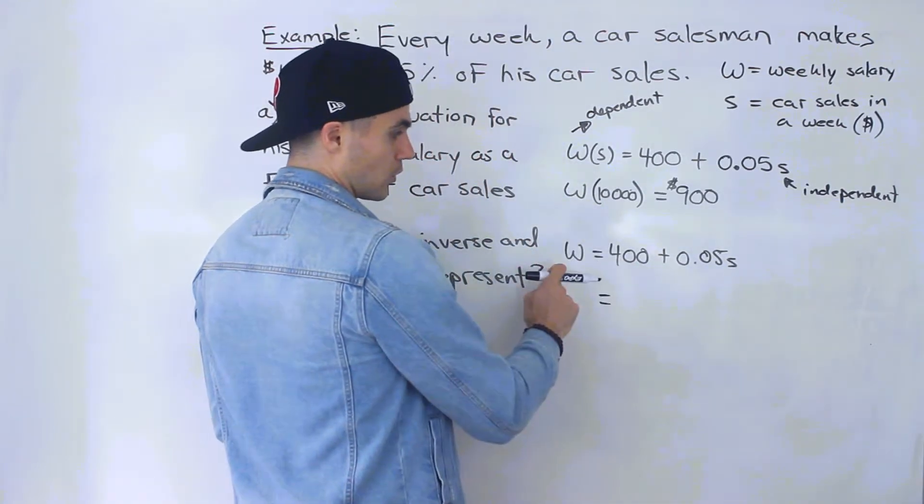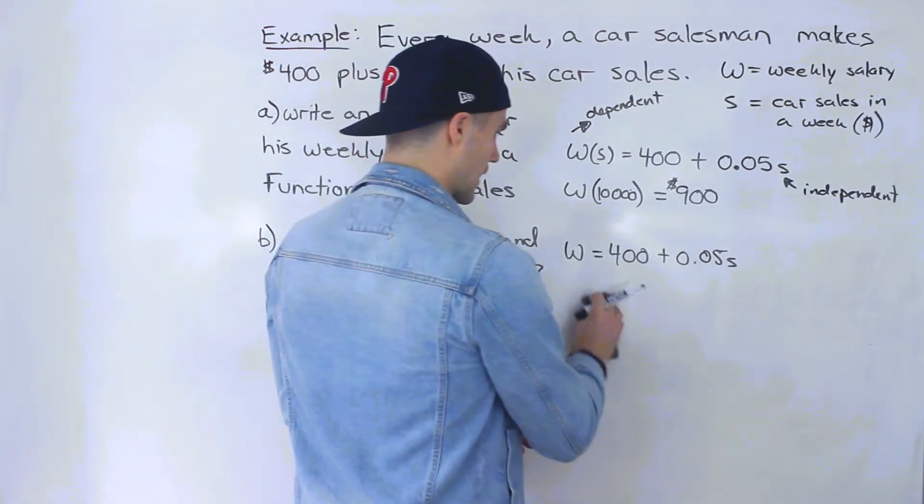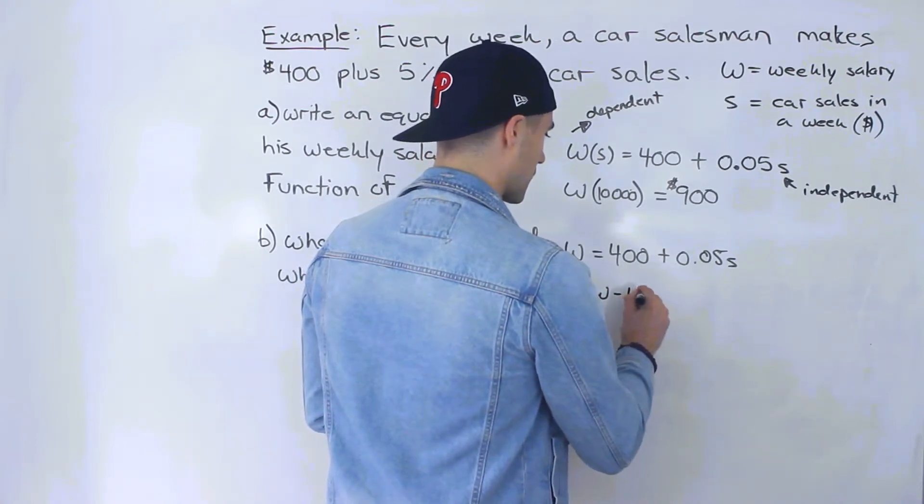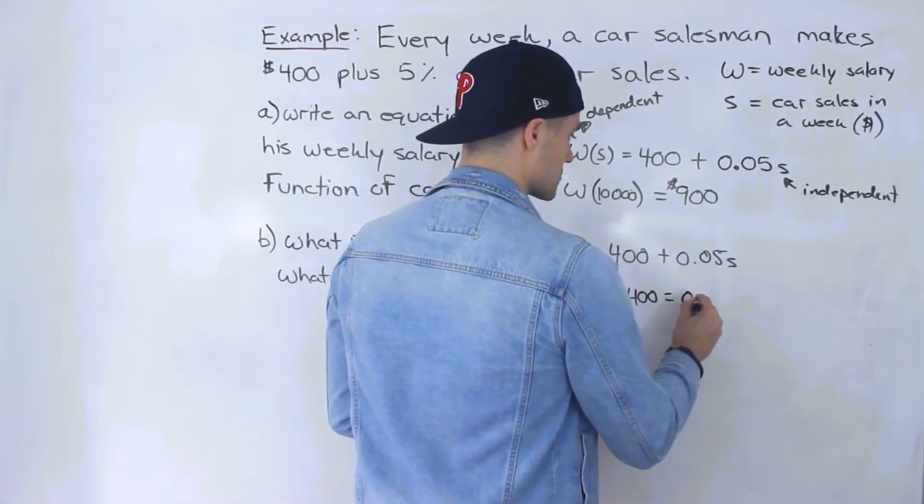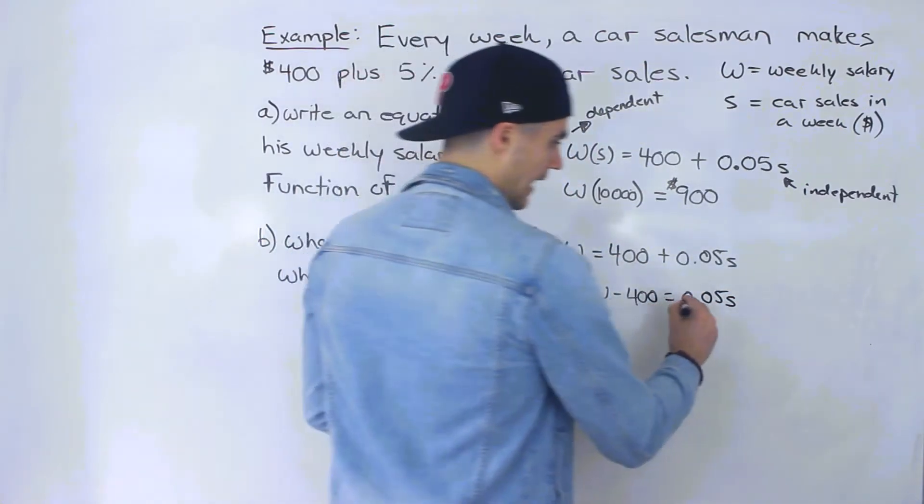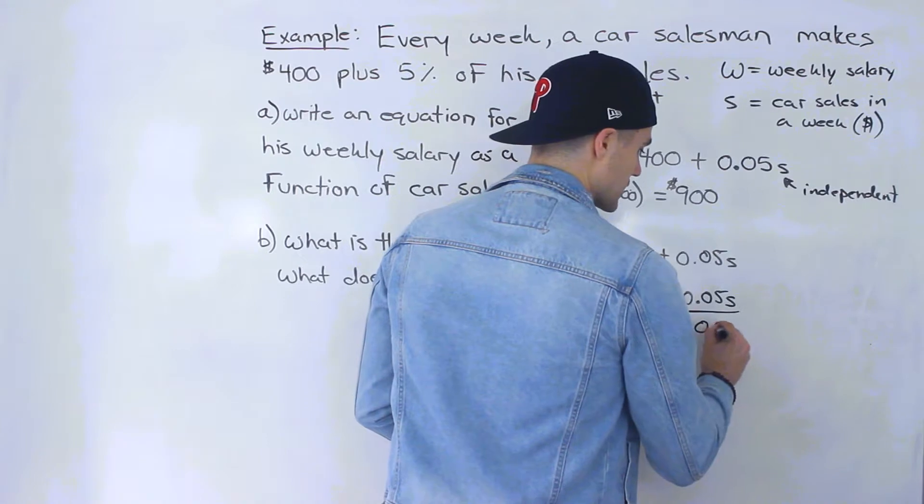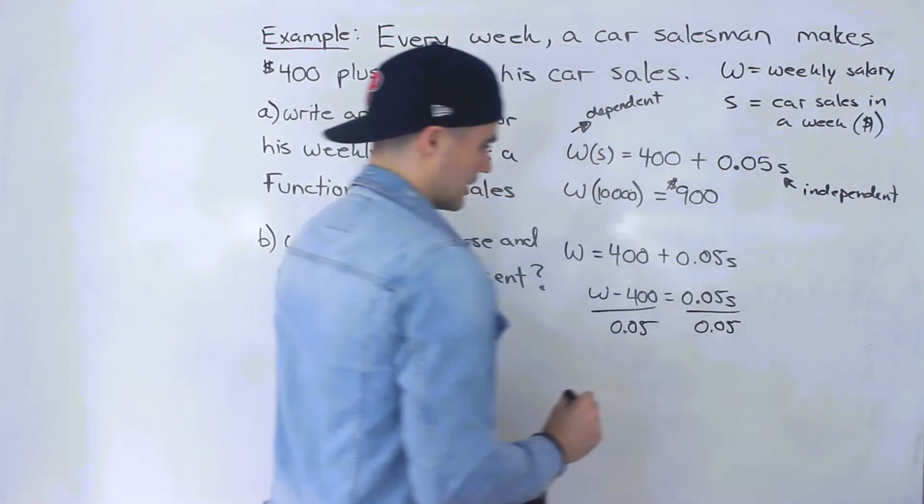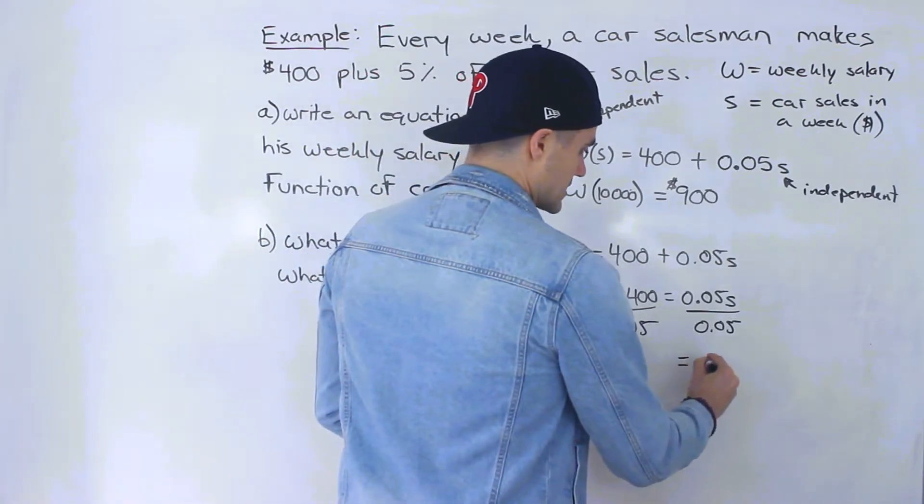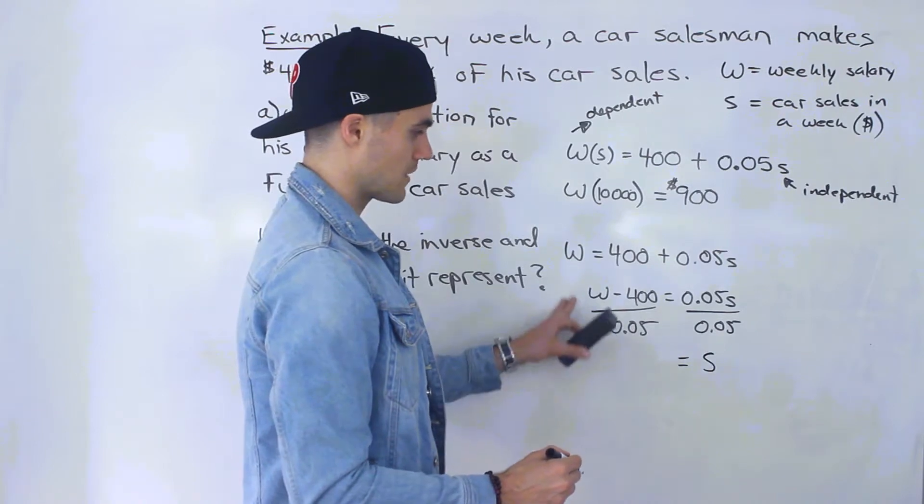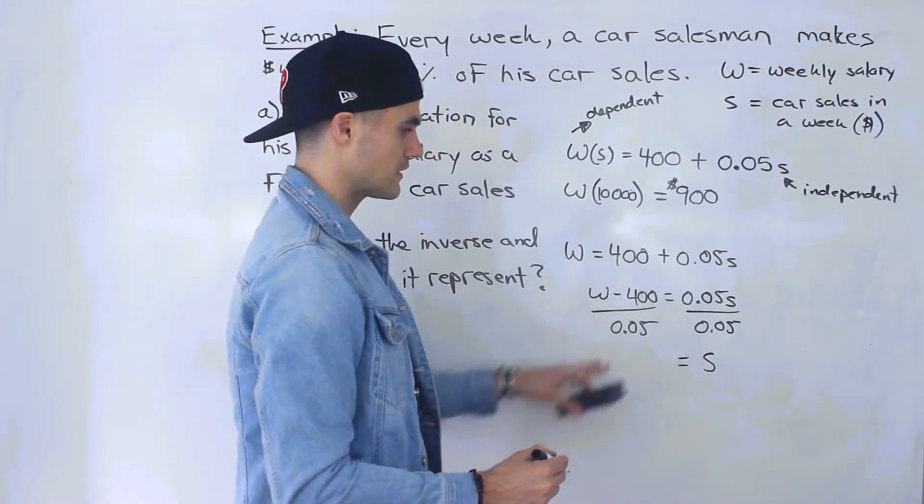We bring the 400 over, so we'll have W minus 400 equals 0.05S, and then to isolate for that S we divide both sides by 0.05.